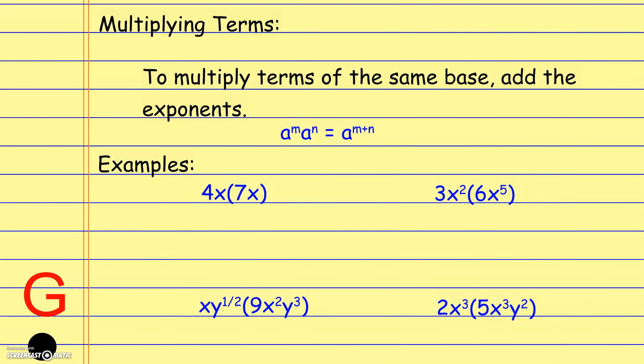When we multiply terms, remember that when we multiply two things with a common base, we add the exponents. They have to have the same base. So in the example, a to the m times a to the n is written as a to the m plus n. Because we have the same base a, we add the exponents.